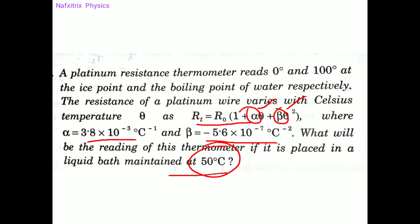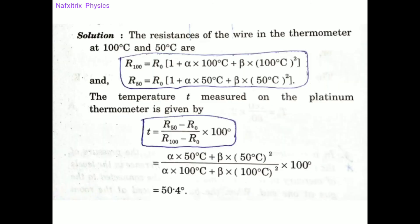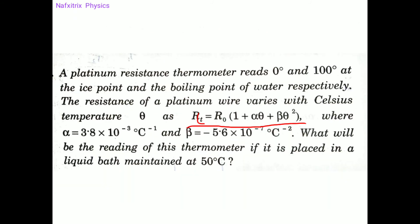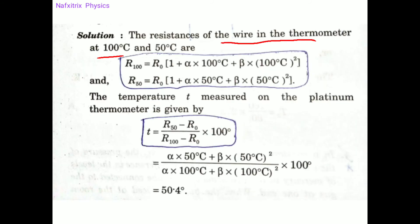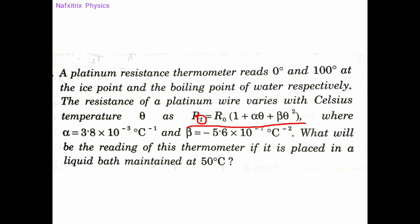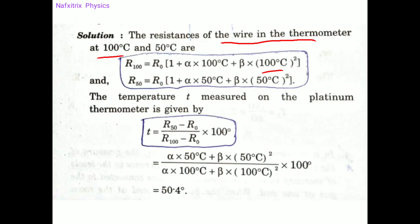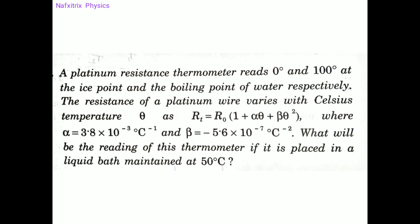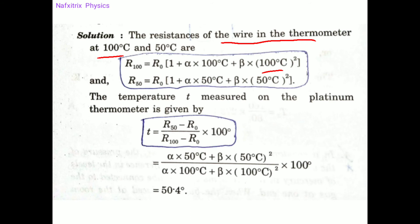Using the formula, R_100 = R_0(1 + α·100 + β·100²) and R_50 = R_0(1 + α·50 + β·50²). The temperature T measured on the platinum scale uses the same formula: T = (R_50 − R_0) / (R_100 − R_0) × 100.